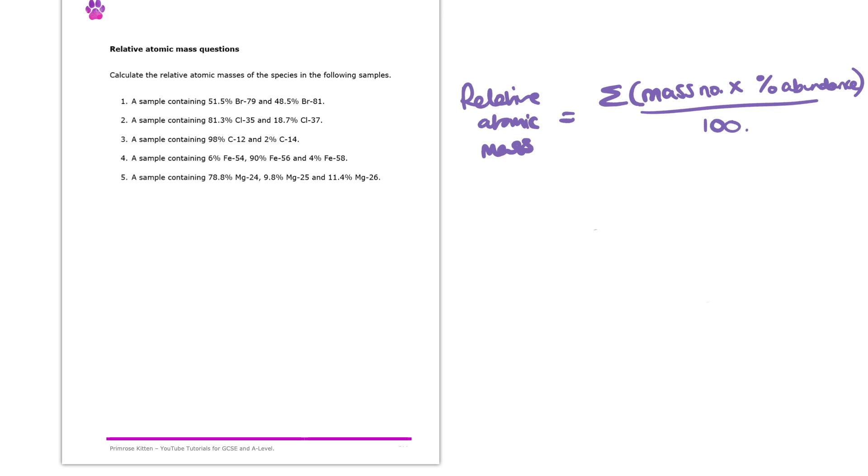So let's do it. Let's put these numbers into our formula. So when we substitute it we end up finding that our relative atomic mass is going to be equal to 24 times 78.8 plus 25 times by 9.8 plus 26 times by 11.4 and all we need to do now is divide it by 100.